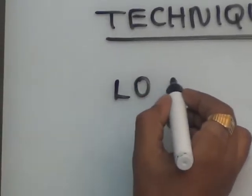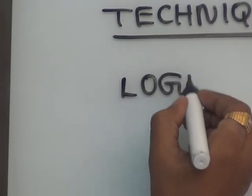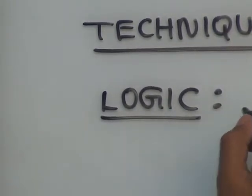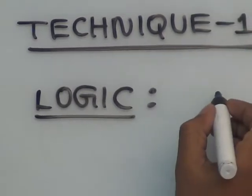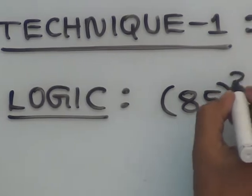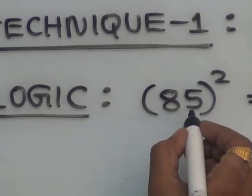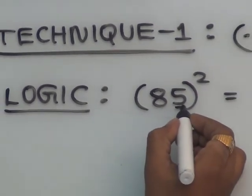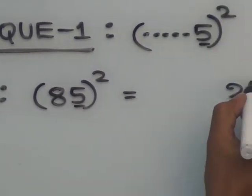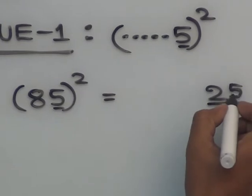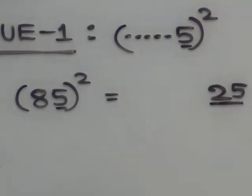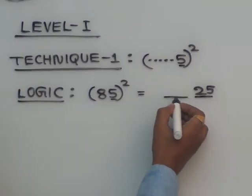Suppose, observe the logic of the law. See here — suppose 85 square. So when units place value is 5, the last two digits of the answer are always 25. This is fixed. Last two digits is 25.